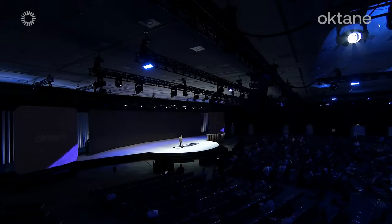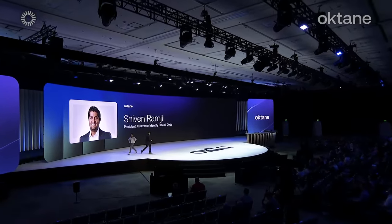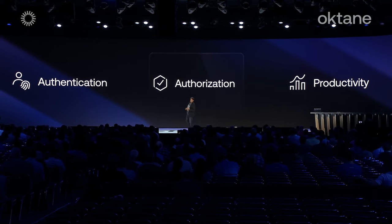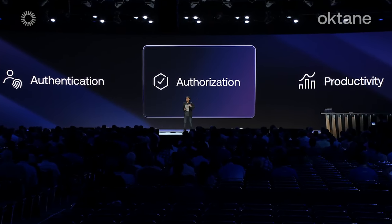We have tons to share on the authorization journey, starting with our FGA product that we previewed last year. I'd like to invite our President of the Customer Identity Cloud, Shiv Ramji. Thank you, Bhavna. Authentication and authorization are two concepts that can be easily confused because they go hand in hand. We already talked about the different ways a user can prove who they are — that's authentication. Now let's discuss how you can implement a system where your authenticated users only see and do what they're supposed to. Let's discuss authorization.